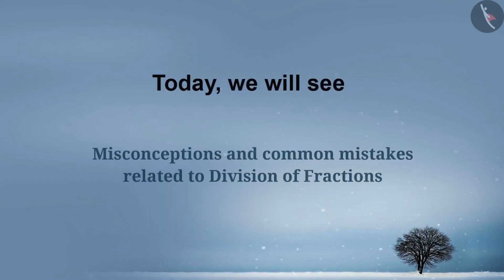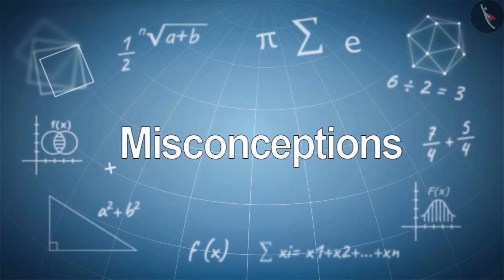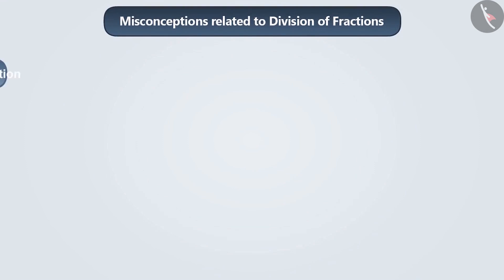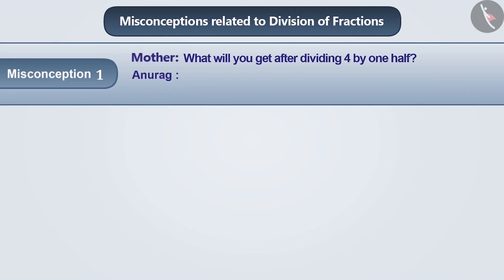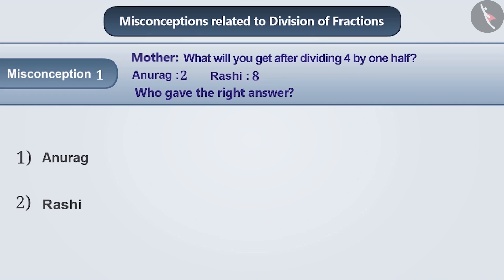Today we will see some misconceptions and common mistakes related to division of fractions. Misconception 1: Mother asked the children, what will be the result of dividing four by a half? Anurag said two and Rashi said eight. So who gave the right answer? Many times children understand that division by one half means making the number half. Because of this, Anurag said that the result of four divided by half is two. This is wrong.